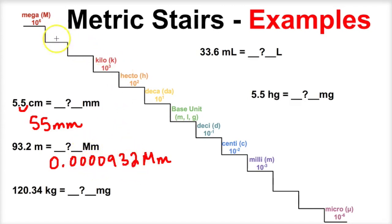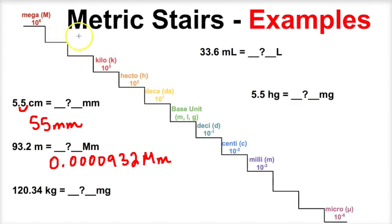Now you might be wondering why there aren't any metric prefixes at 10 to the fourth or 10 to the fifth. Well, that is because there really aren't any. We go from kilo — 10 to the third — to mega, which is 10 to the sixth. But understand that there are two little steps in between that we need to account for. Similarly, there is no metric prefix for 10 to the negative fourth or 10 to the negative fifth, but make sure when you memorize these metric stairs that you are taking those into consideration.